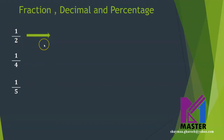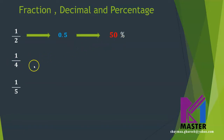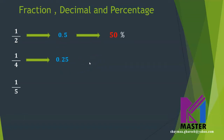One half, if I want to change it into a decimal number, it will be 0.5. I want all of you to know by heart how to change them into decimals or percentages. The half as a decimal number is 0.5, and as a percentage will be 50%. What about the quarter? The quarter as a decimal number is 0.25 or 25 hundredths. In order to change it into a percentage, we multiply it by 100.